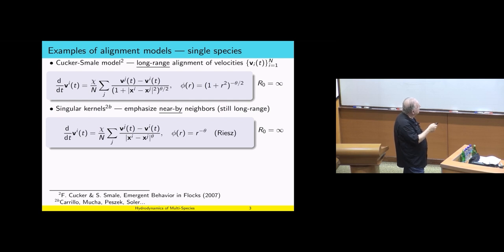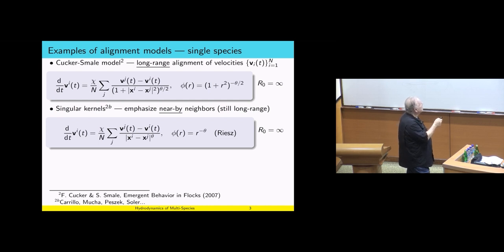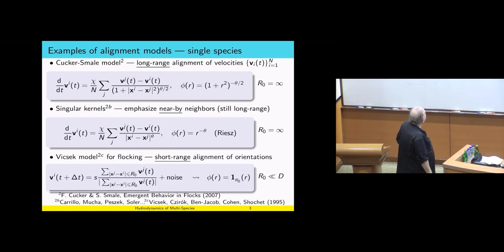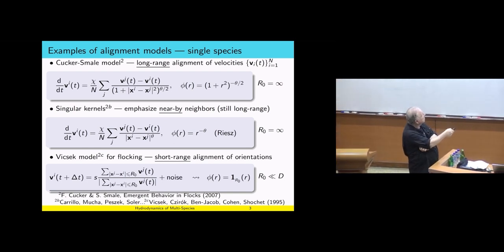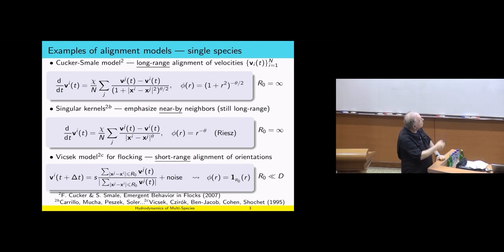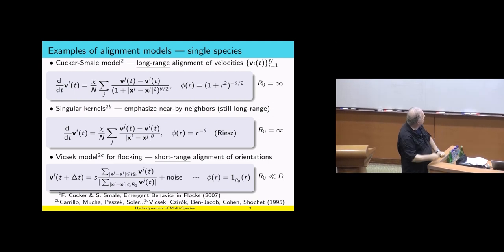Here is another example of a kernel where the important thing is not just the tail but the singularity at the origin — this is the Riesz kernel. The intensity of the singularity depends on theta. And finally, coming from the Vicsek model, we get an interaction kernel which is the characteristic function of a ball of radius R0. The distinct difference here is that this has compact support. The size of the support is R0, and R0 is much smaller than D, the diameter. In the first two examples the diameter is infinite.